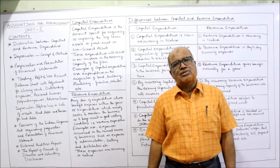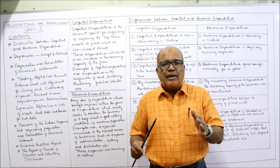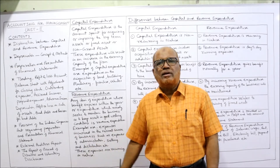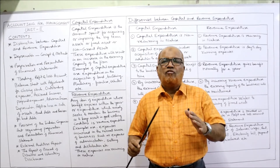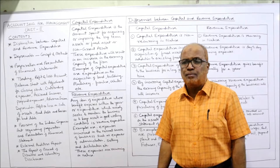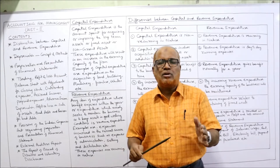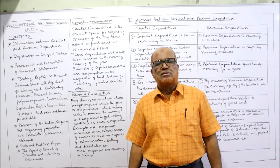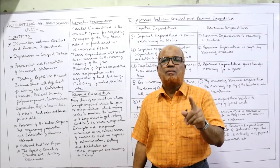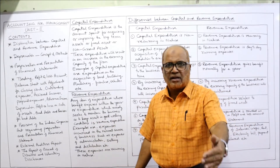Next, provisions of the Indian Companies Act 2013 regarding preparation and presentation of financial statements — including the format for the profit and loss statement and balance sheet. Finally, the external auditor's report, the board of directors' report, and voluntary disclosure requirements. These are the complete contents of Unit 2. In this video, I will cover only the first aspect: distinction between capital and revenue expenditure.